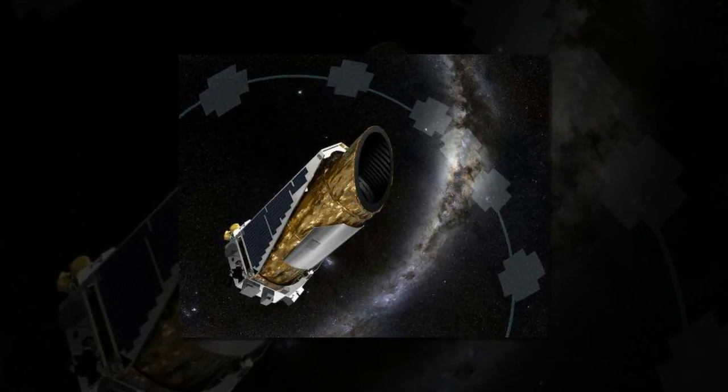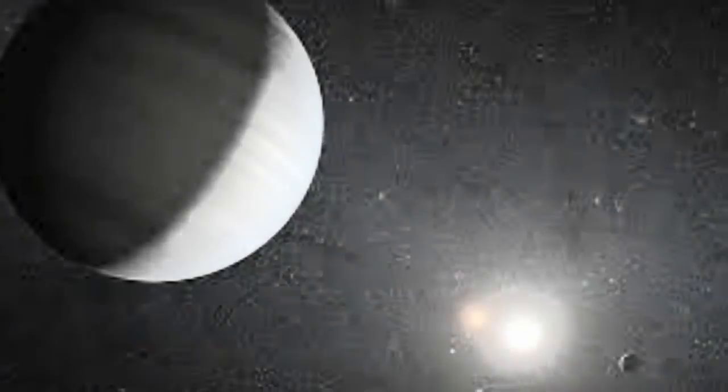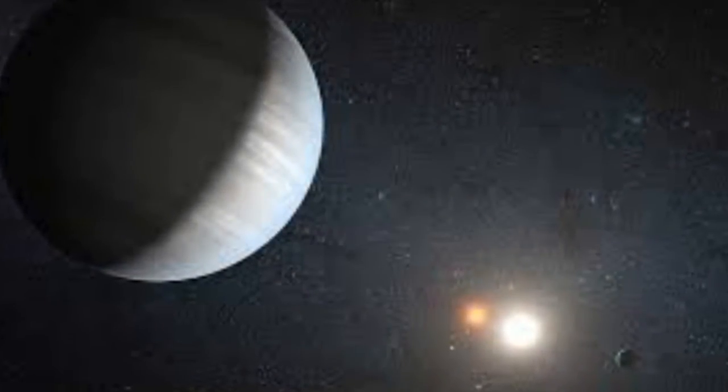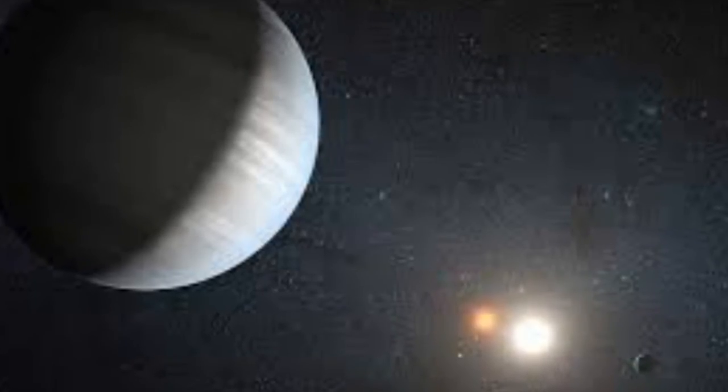In a binary star system, the habitable zone is more complex than around a single star, but it can be readily calculated once astronomers know the masses, radii, and temperatures of the stars.